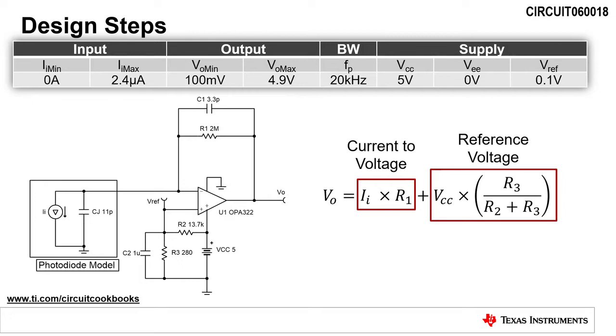The equation for VO is the transfer function of the circuit. The first term, I sub I times R1, is the input current to the output voltage conversion. The second term, Vcc times R3 divided by R2 plus R3, is the reference voltage used to bias up the output.